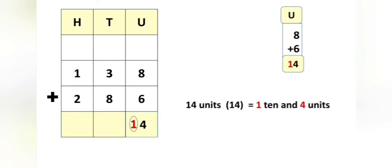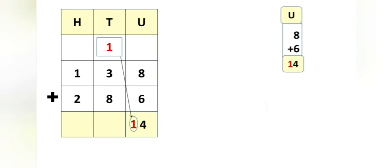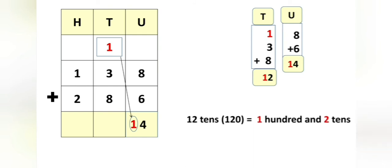Now children, as I mentioned before, we cannot write 1 in the units place, because in the number 14 there are 4 units and 1 ten. So 1 ten will go as a carry over in the tens place. Now let us add the tens place. We have 3 tens and 8 tens already there, and 1 more new ten has joined. So 1 plus 3 plus 8 is equal to 12. Here we get the answer 12 tens, and 12 tens means the number 120.